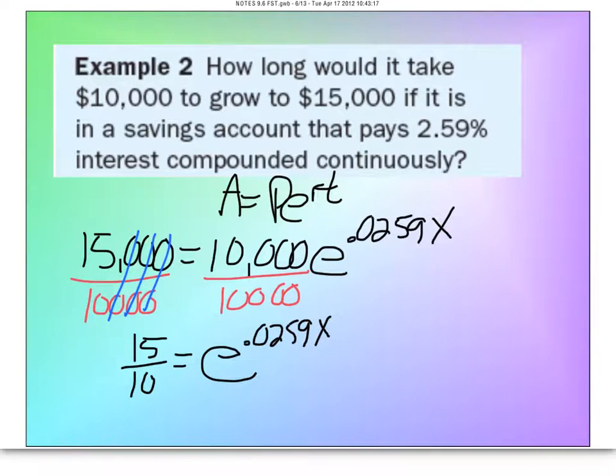Now, the exponent is by itself, so let's rewrite it as a log. Log base E, or natural log of this, is this value. And I'm just going to jump right into the natural log this time. And I'll do 15 divided by 10 is 1.5 equals 0.0259X.